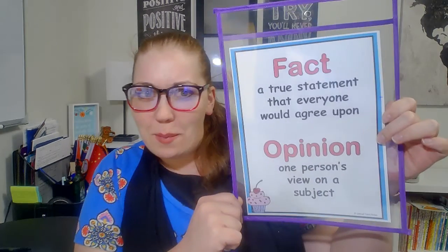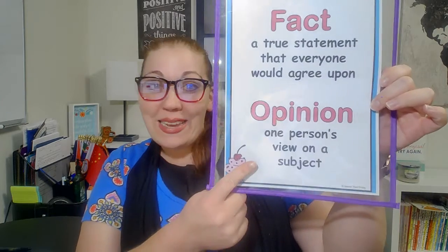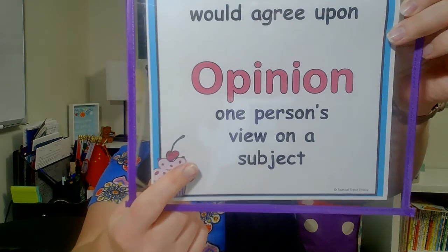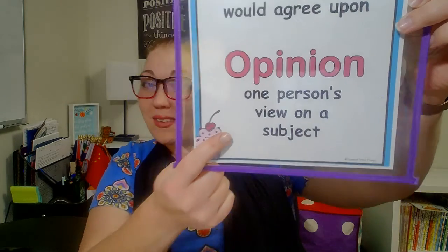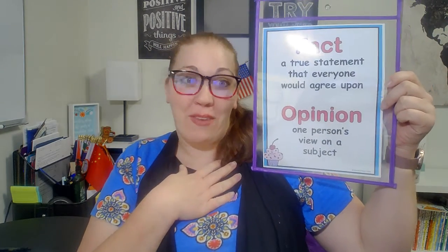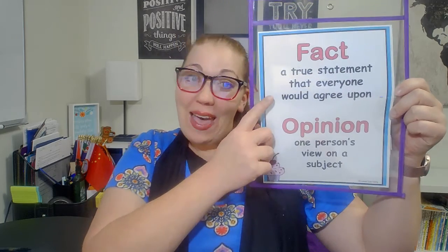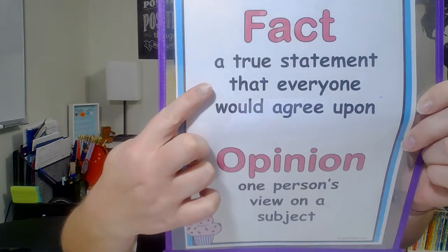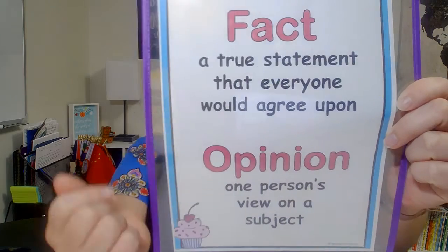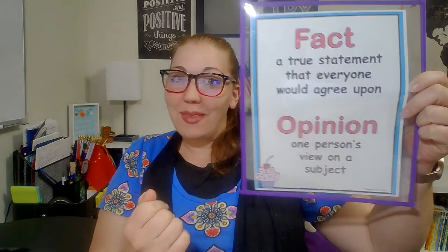So let's review. We learned about facts and opinions a couple weeks ago, where an opinion is something that is only one person's view on a subject — like my favorite ice cream or my favorite animal. Those are all opinions. A fact is a true statement that everyone would agree on. So while we're learning about Antarctica, we're going to think about what facts we can find about Antarctica.